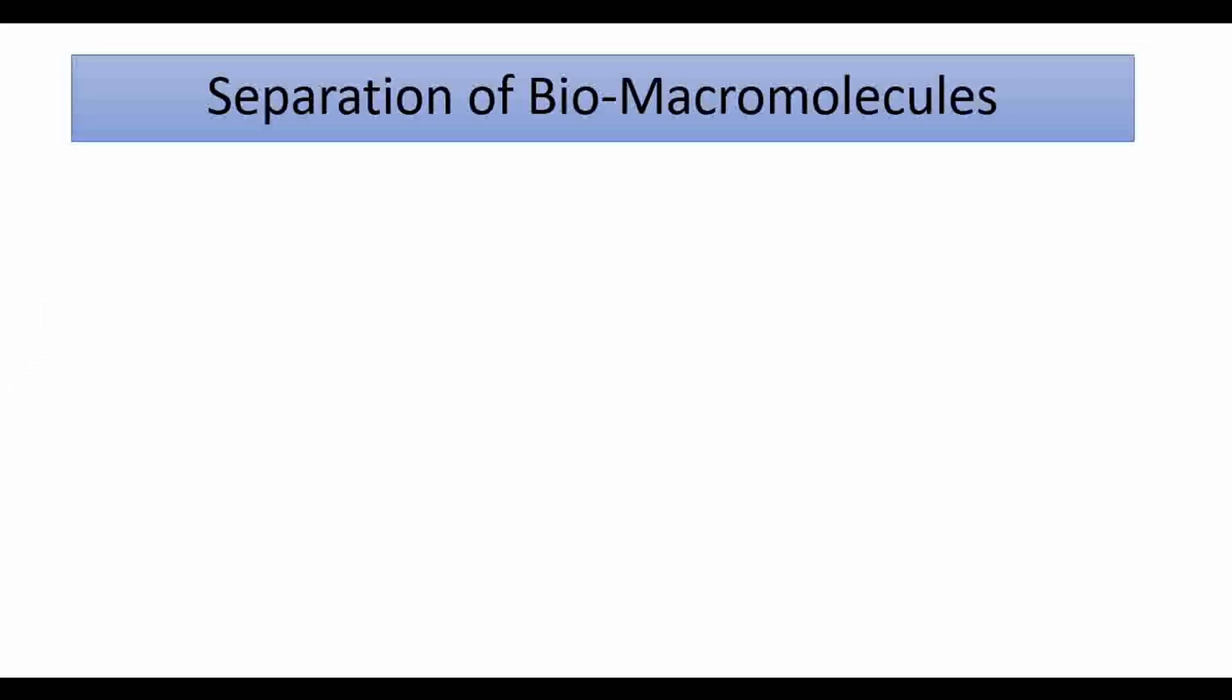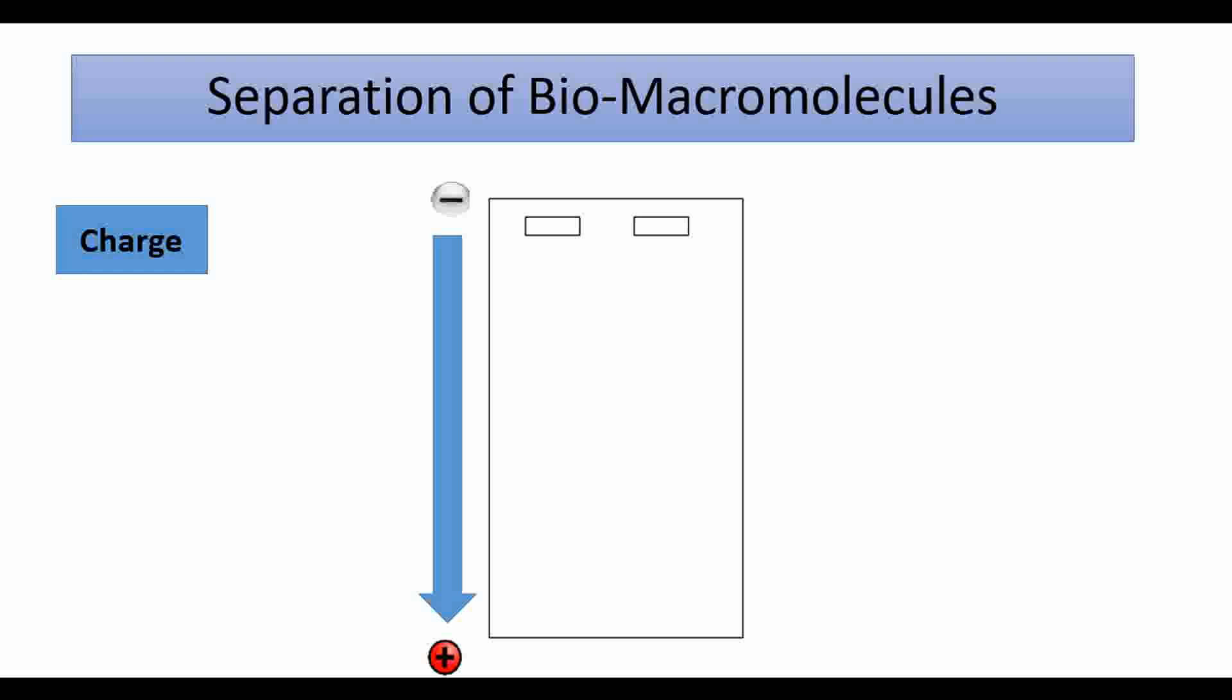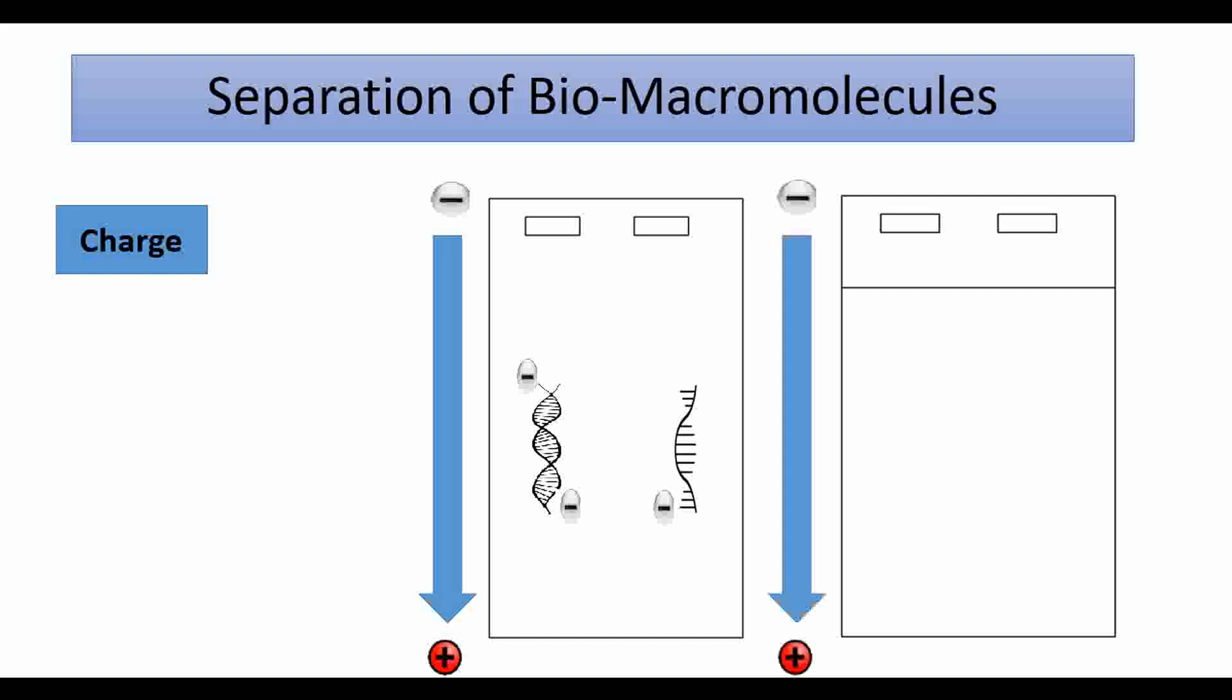The separation of biomacromolecules depends on different properties. One of these is charge. We know the negatively charged molecules migrate from negative side towards the positive side. Molecules like DNA or RNA, which are already charged due to the phosphorous group, migrate automatically towards the cathode. But this is not the case in protein electrophoresis.